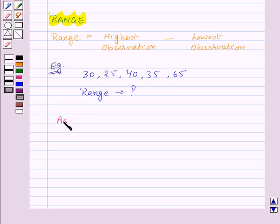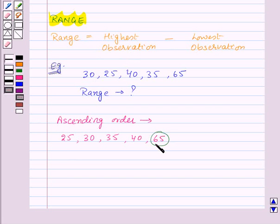Thus we have 25, 30, 35, 40, and 65. Now range is given by highest observation minus lowest observation. And here 65 is the highest observation and 25 is the lowest observation. So range will be equal to 65 minus 25, which will be equal to 40.